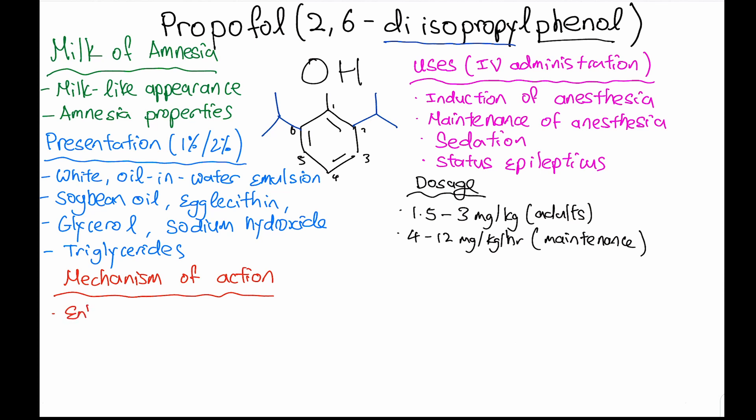In terms of the mechanism of action of propofol, it acts on the GABA-A receptors, which are found mostly in the central nervous system. It basically increases the time which the ion channel is opened, and this allows for more chloride ions to enter the post-synaptic cell membrane, which then hyperpolarizes this membrane and decreases neurotransmission.